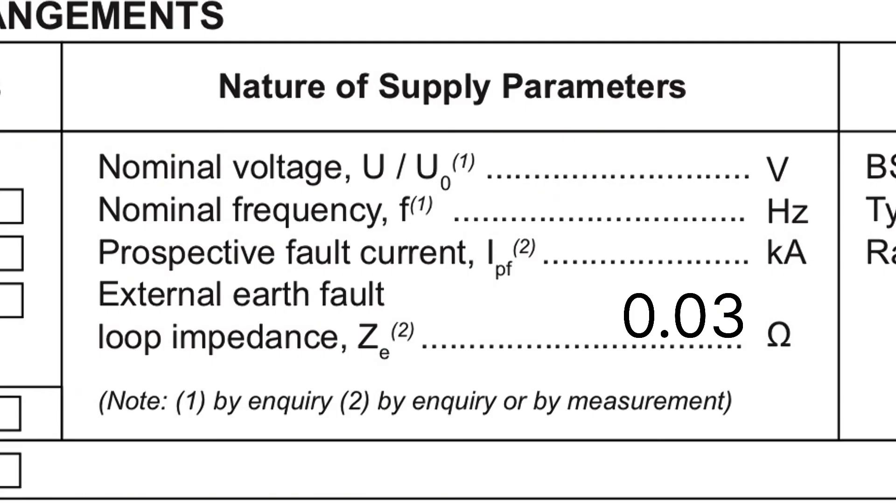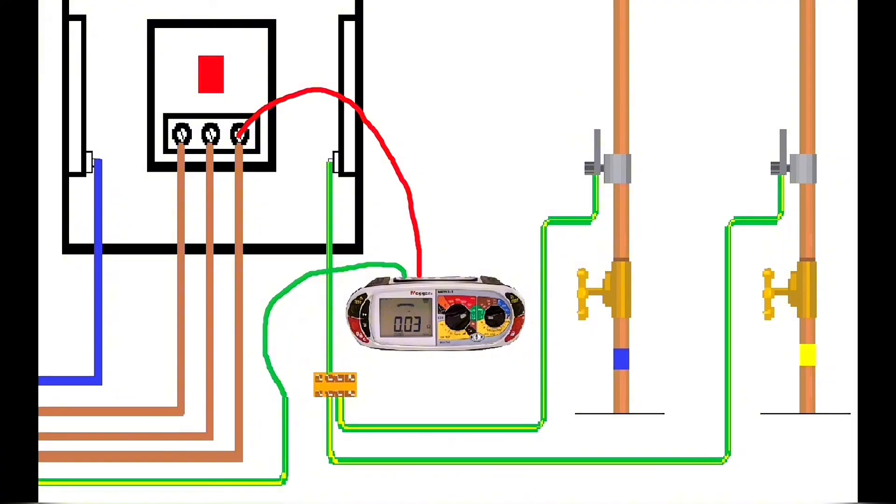That's my Ze value, my external earth fault loop impedance of this distribution board. You note all parallel earth paths are removed because the earthing conductor was removed from the MET.